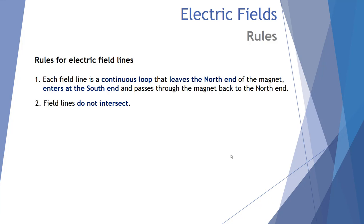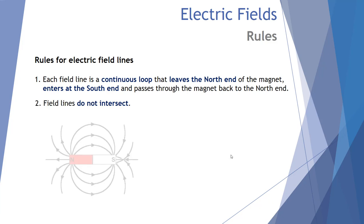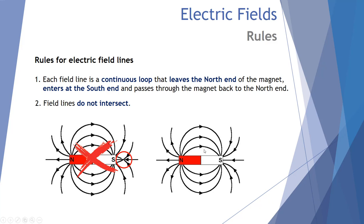Rule number two: field lines do not intersect. Students lose marks on exams when they draw diagrams with overlapping lines — it's a regular exam question to draw the field between two bar magnets. Even lines that are merely touching should be separated; they must always remain distinct.